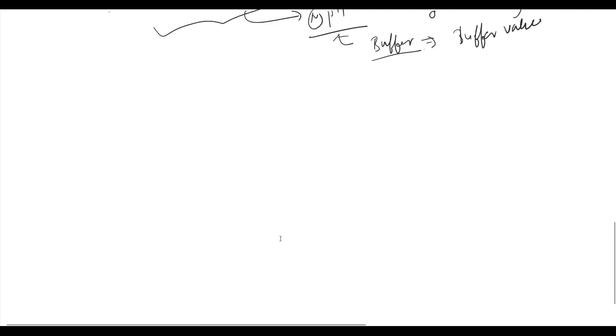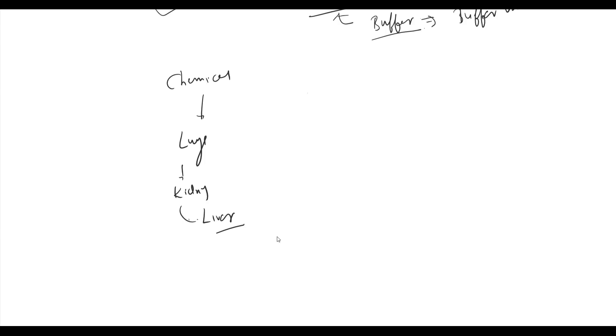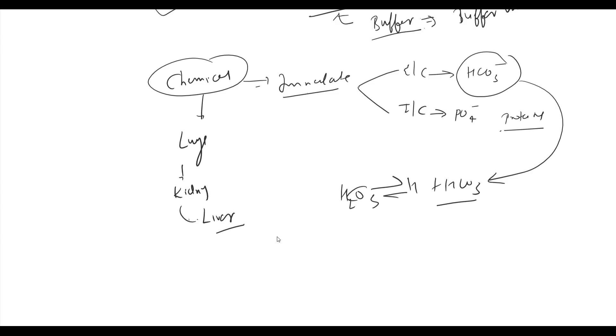Buffering is provided by chemical buffers, lungs, kidney, and to some extent liver. Chemical buffers provide immediate buffering, divided into extracellular and intracellular buffers. Major extracellular buffer is bicarbonate; intracellular buffers are phosphate and proteins. Intracellular phosphate concentration is 12 times that of extracellular fluid.